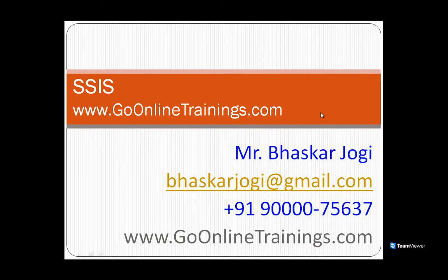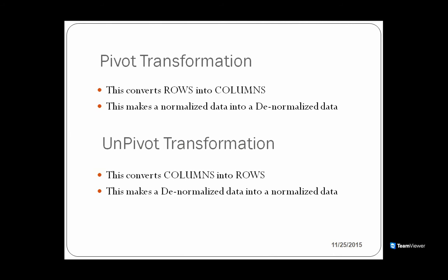Good morning guys. Welcome to GoOnlinetraining.com. Today let us look at the pivot and unpivot transformations in MSBI, part of SSIS. Pivot transformation converts rows into columns — this is also known as making normalized data into denormalized data. Unpivot transformation is the reverse: it converts columns into rows, turning denormalized data back into normalized data.